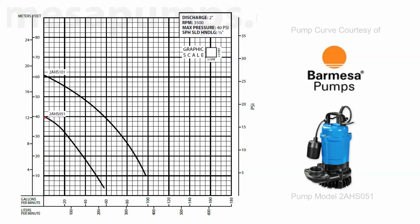At half horsepower this pump will produce a shutoff pressure of 40 feet, and at the one horsepower version roughly 61 feet. On the flow side, the maximum flow rate of the half horsepower is about 55–56 gallons per minute, and the one horsepower is roughly 95–96 gallons per minute. You can tell that the increase in work is a direct correlation of the flow and head performance of the particular pump.